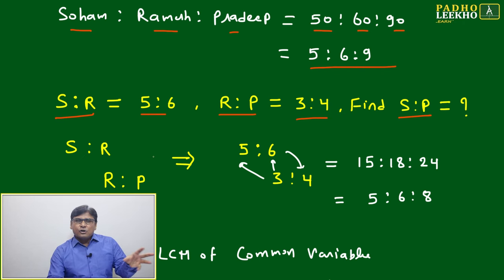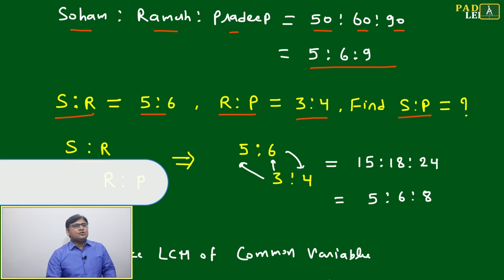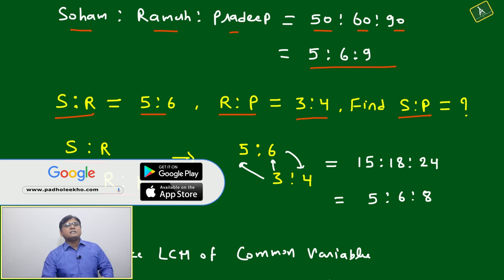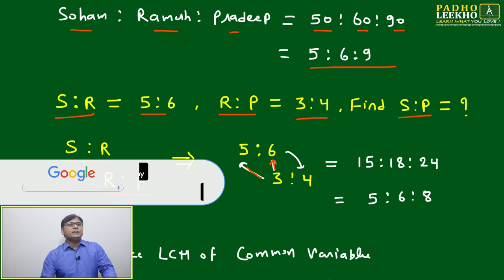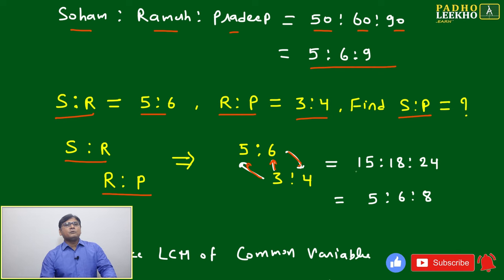What we'll do is apply some common sense or mathematical technique. It is S:R, R:P. Just write the numbers 5:6, 3:4. You multiply - 5×3 is 15, 6×3 is 18, 6×4 is 24.